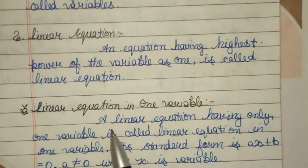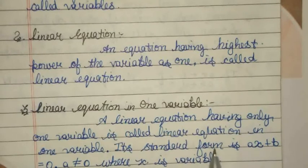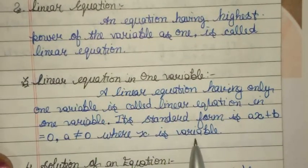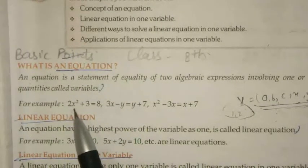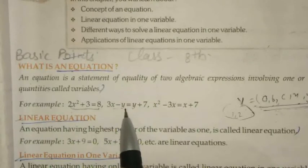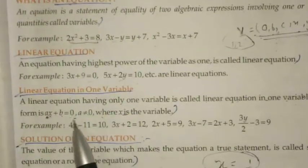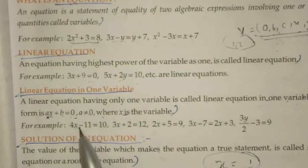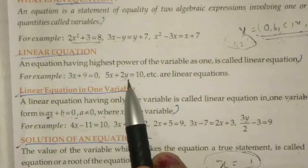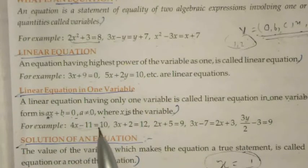A Linear Equation having only one variable is called a Linear Equation in One Variable. Its standard form is ax + b = 0, where a ≠ 0 and x is the variable. Examples of equations are: 2x² + 3 = 8, or 3x - y = y + 7.